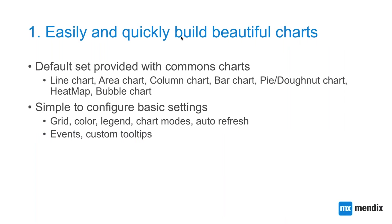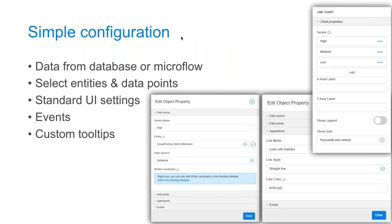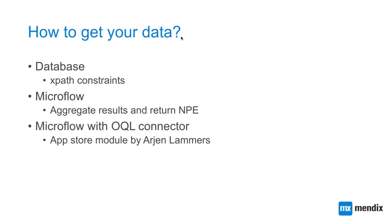For the first goal — easily and quickly building beautiful charts — we provided a set of common charts with simple settings to configure your basic needs. You can select the grid, whether you have an x-axis, y-axis, or both, select colors, toggle a legend, set different settings per chart type, and enable auto-refresh. There is also support for events: when you click on a data point, you can call a microflow. You can also create custom tooltips. In the default simple configuration, you add a series, select an entity or microflow, select x and y, configure some settings, and you're done.